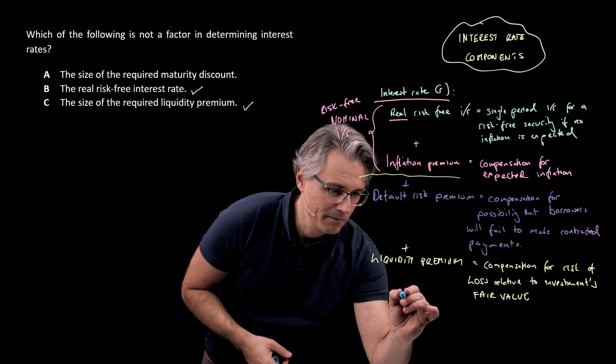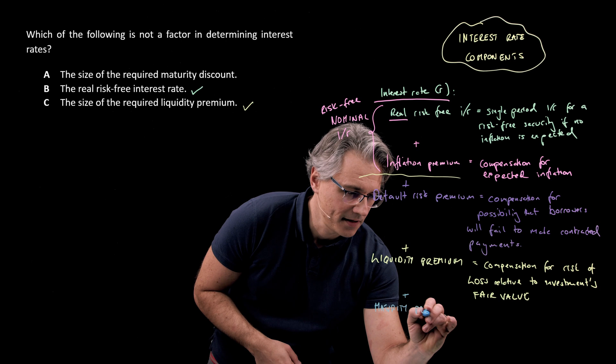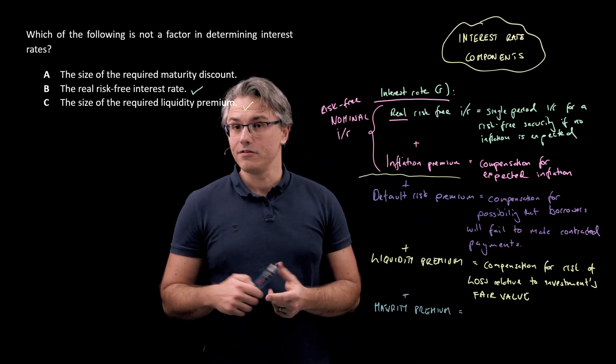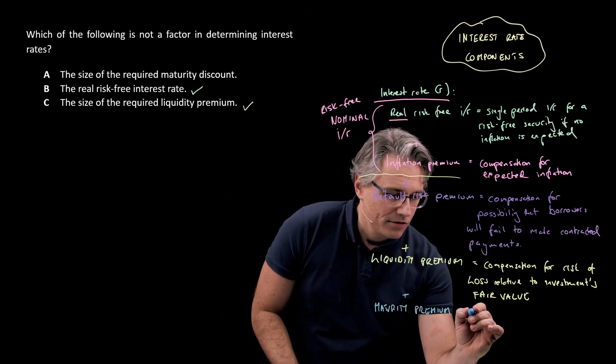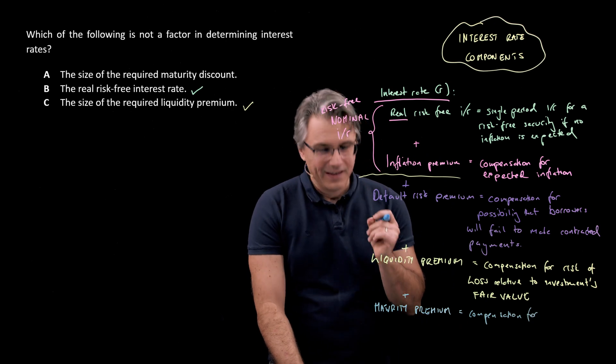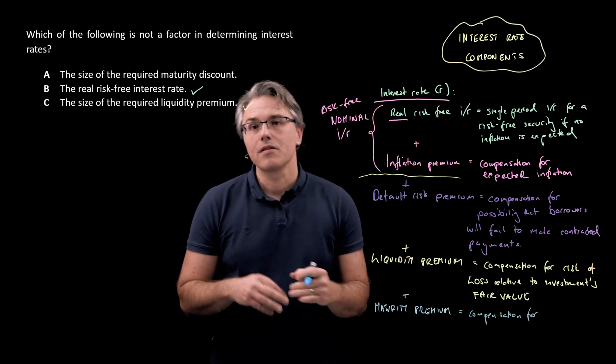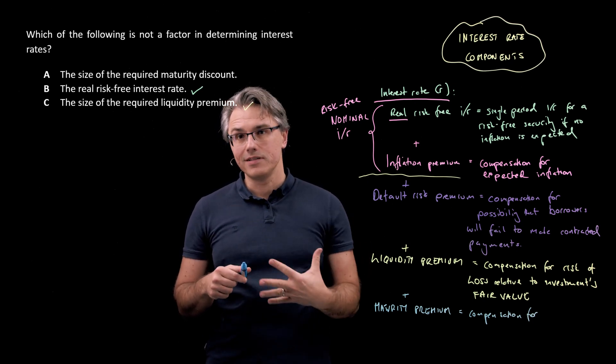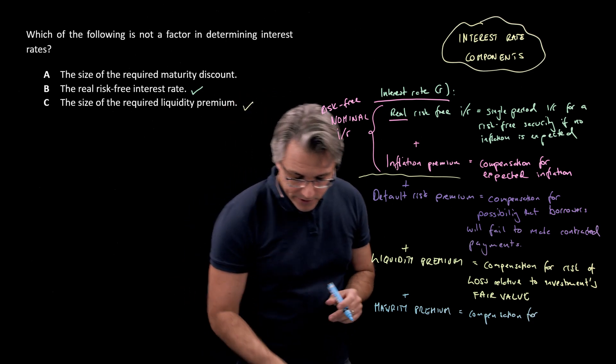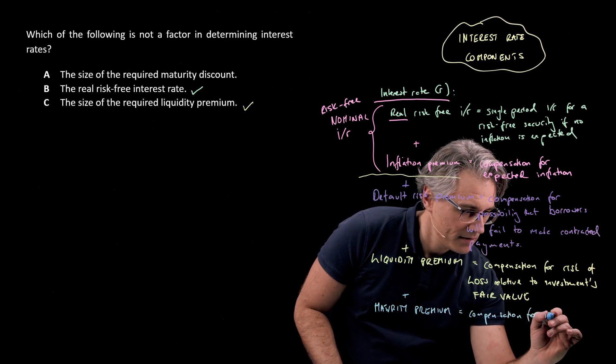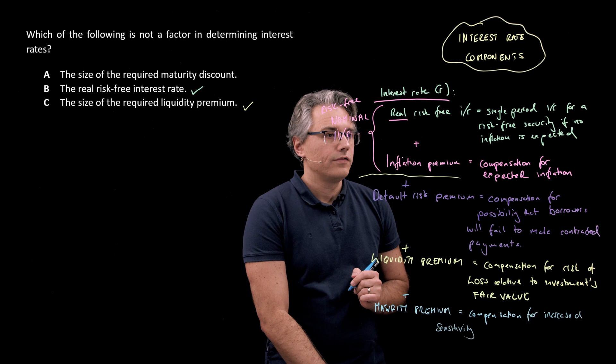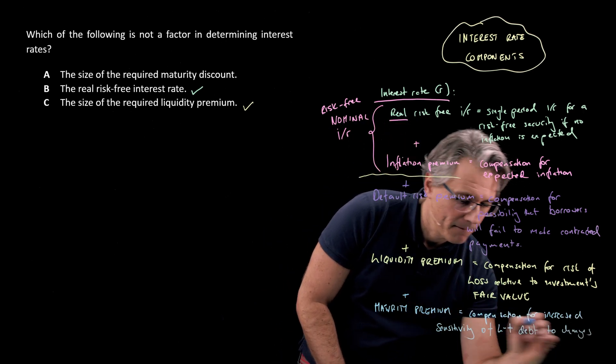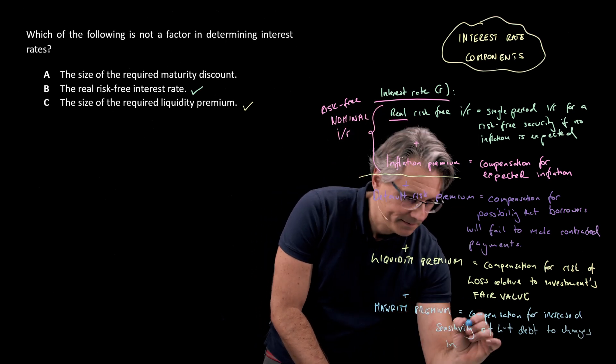And finally, we're going to have something called the maturity premium. And this is, well, the full extent of this will be realized when you study fixed income or if you have already studied fixed income. So the valuation of bonds, for example, because this is additional compensation for the fact that longer term securities, for example, bonds, which have longer tenors, a longer time until maturity will simply be more volatile and exhibit more sensitivity to what's happening in the market, more specifically to interest rate changes. So let me write this down. Compensation for increased sensitivity of long term, so this is LT, long term debt to changes in market interest rates.